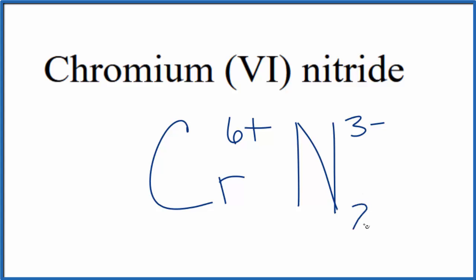If we had two of these nitride ions, 2 times 3-, that gives us 6-, that would balance the 6+, give us a net charge of zero.